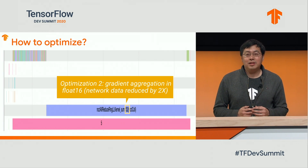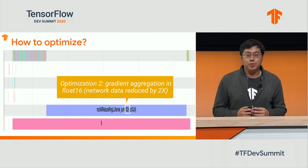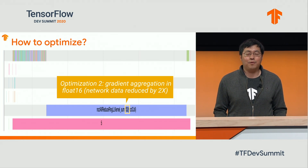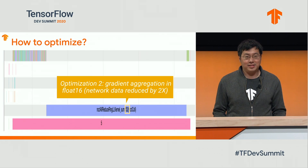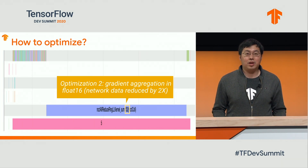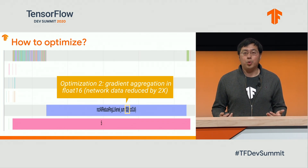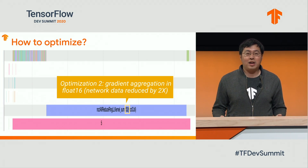For the second optimization: if you notice the big blue bar says FP32, it means gradient aggregation is in full-precision float32 format. We know the model can be trained with mixed precision, so gradients can actually be in lower precision like float16. So can we aggregate gradients in float16, which would efficiently cut the network data being transferred by half and improve performance?